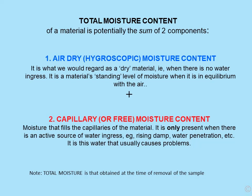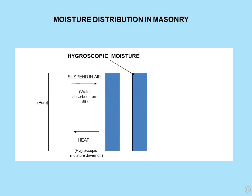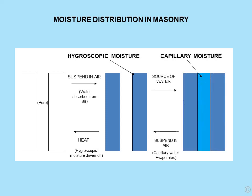It's usually, but not always, this capillary fraction that causes the problems — this is the water that is usually unwanted. Looking at the distribution of moisture in masonry, let's start with a small piece of brick. That small piece of brick has a pore present in it — we've magnified it enormously. This piece of brick has been in an oven and completely dried out, absolutely as dry as a bone. The minute we take it out of the oven and suspend it in air, water is simply absorbed from the air. This is where we get our hygroscopic or air dry moisture from.